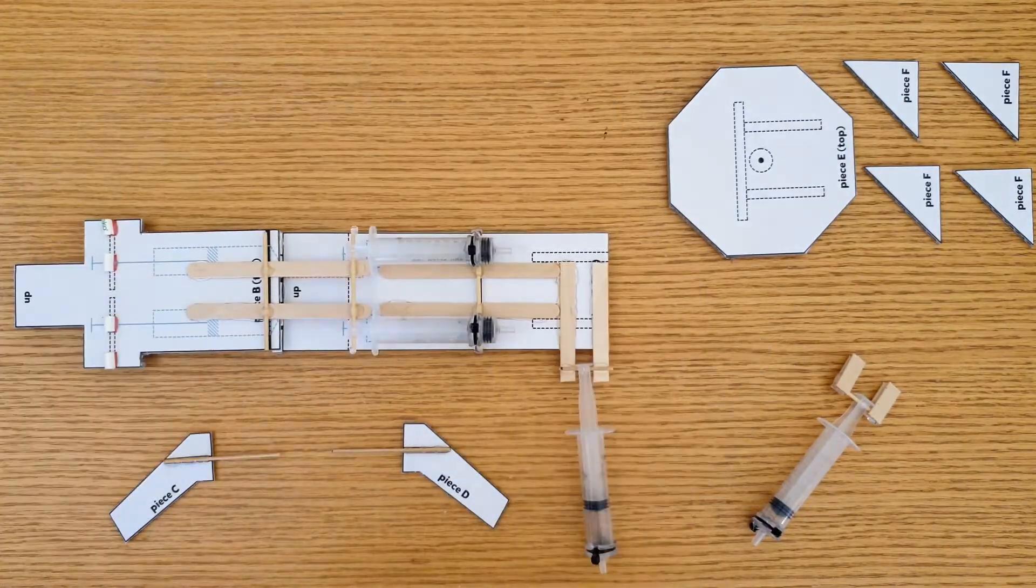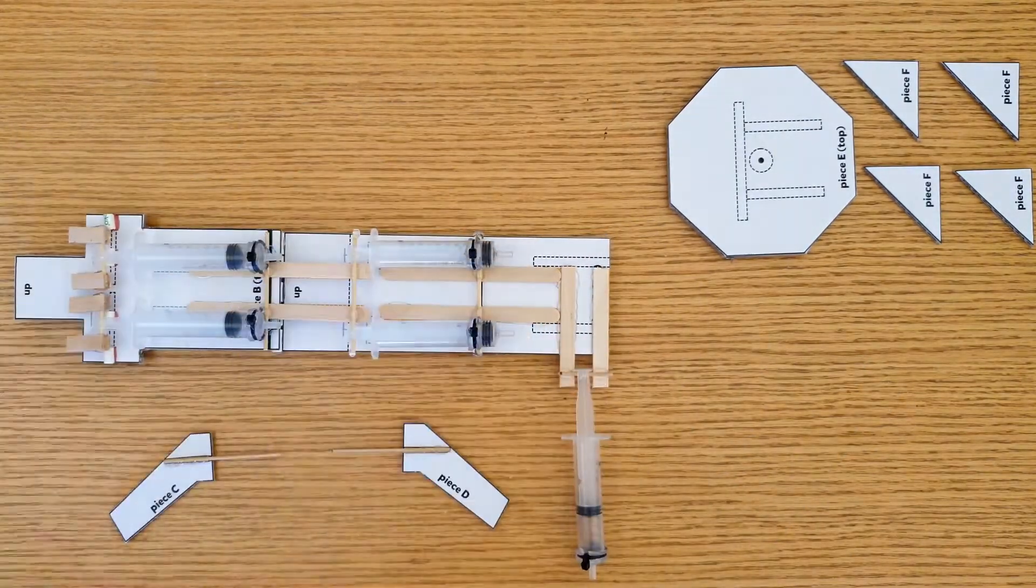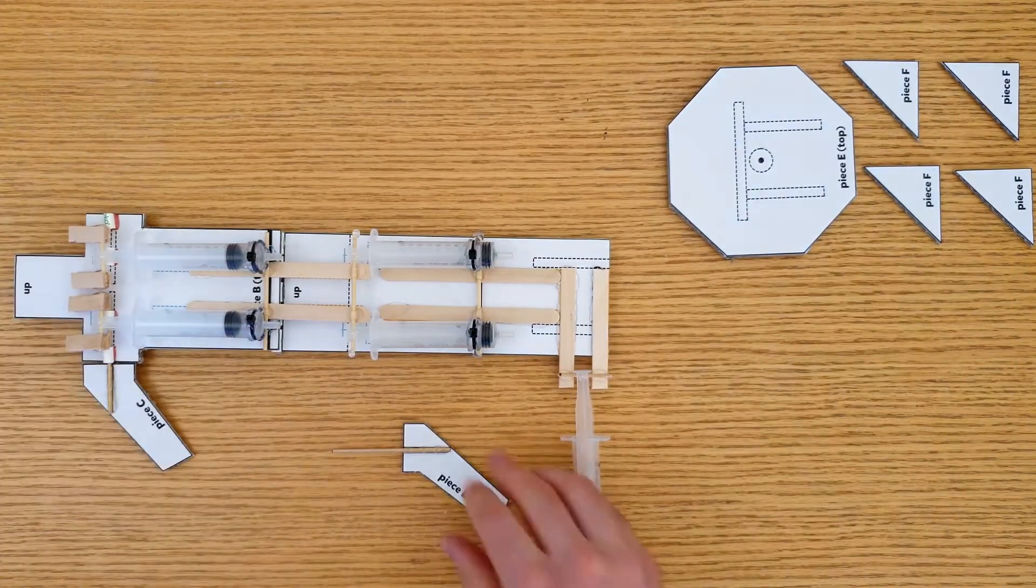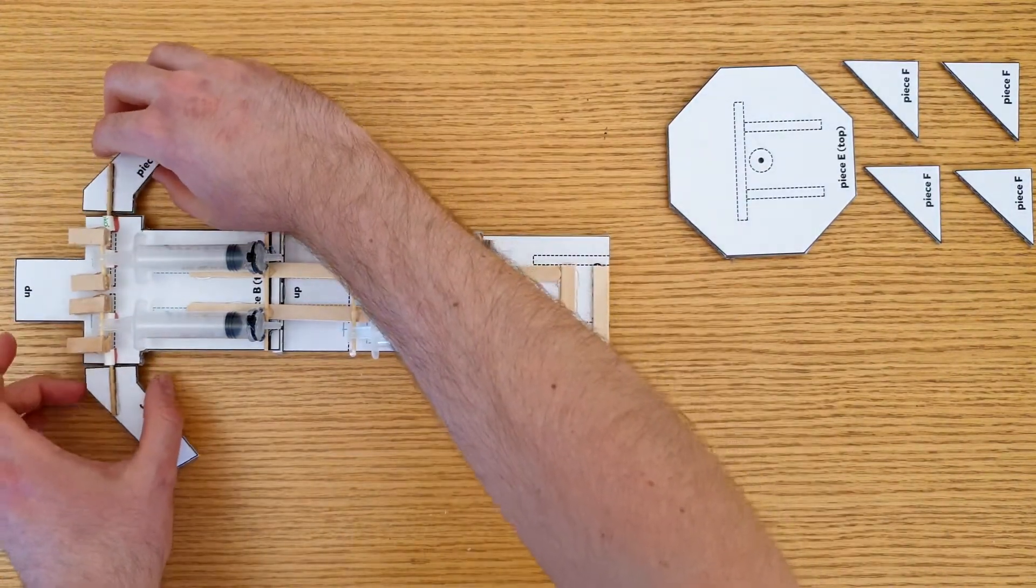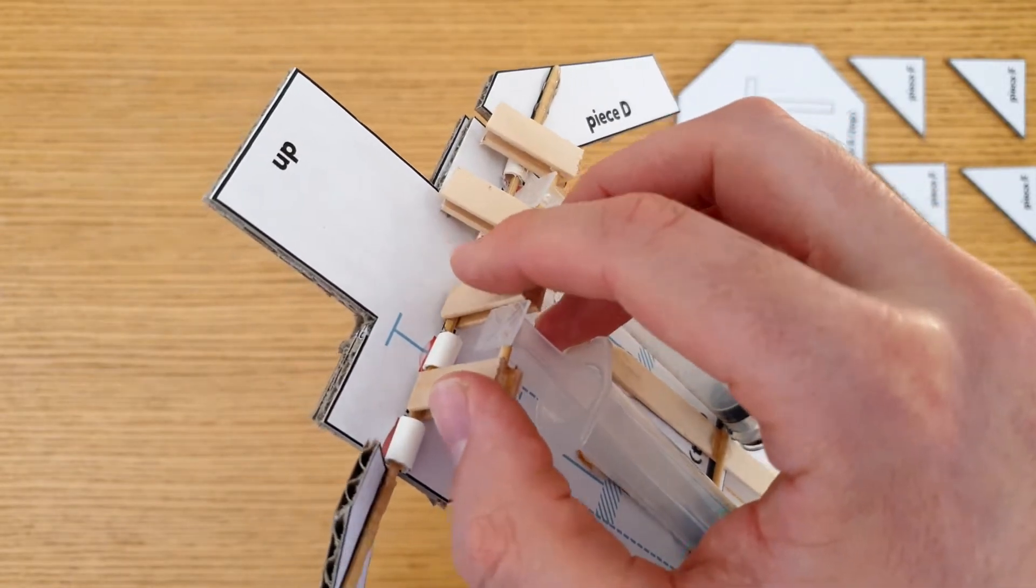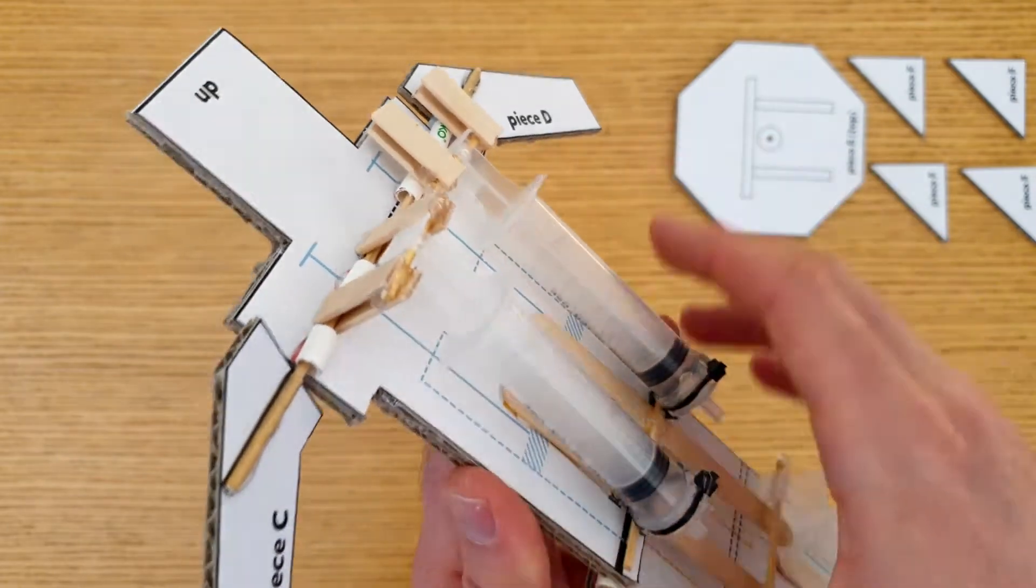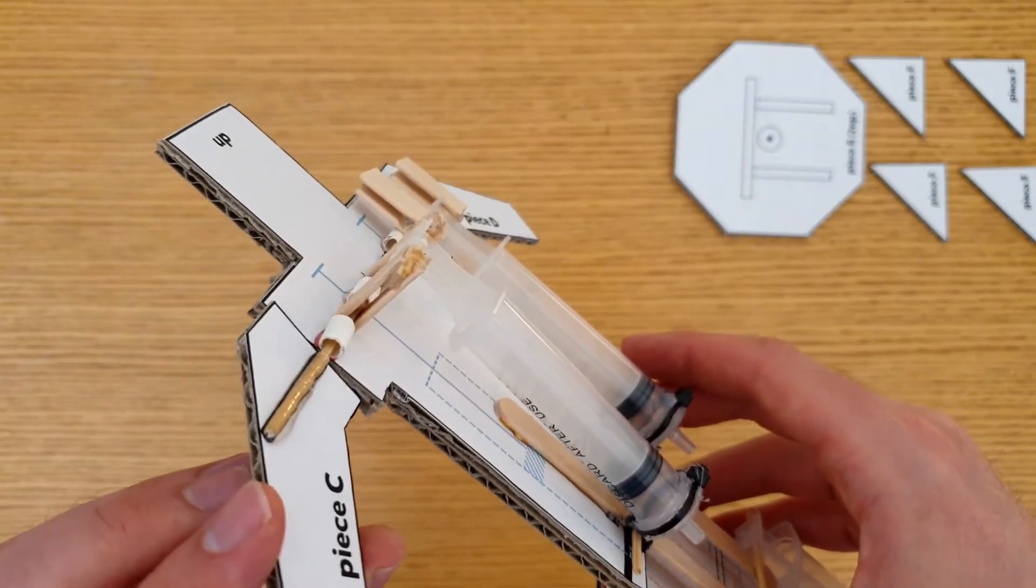Slide the zip tie loops of these syringes onto this skewer, one on each side. Then slide piece C and piece D through these straws. Next, place this end of these pop sticks onto these skewers. They should sit nicely either side of the skewer, and the cardboard piece should be in the same plane as the pop sticks.